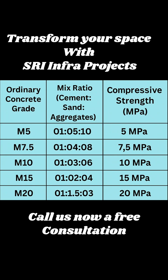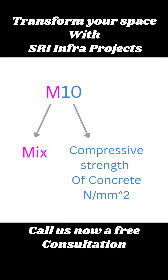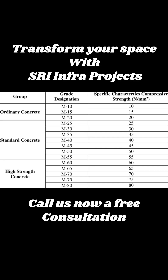M10 to M20 grade concrete falls under ordinary concrete. Here, M means mix, and the number — for example, 10 — indicates the compressive strength of the concrete.